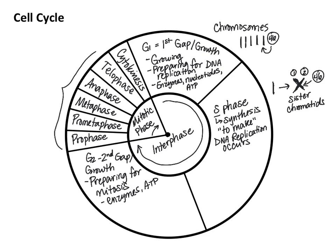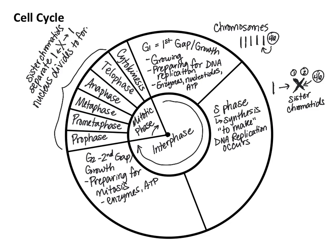During the first five phases, the sister chromatids separate. So the X-shaped chromosomes each separate, and you're back to having rod-shaped chromosomes. The nucleus also divides to form two new nuclei. Then in cytokinesis, the whole cell — the cell membrane, the cytoplasm, the other organelles — all divide. So the rest of the cell divides, and then the cycle starts all over.